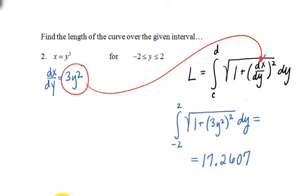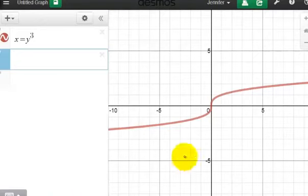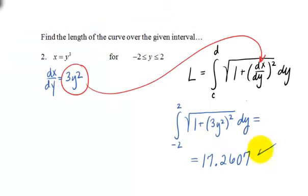If we want to look at the graph of this, which I have over here, we're going from negative 2 to 2. You can see the length of the curve here would be defined by that value that we just found. There's the curve. We're just looking at that chunk, and we get this value.